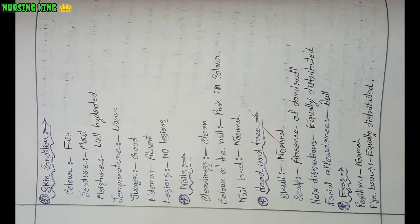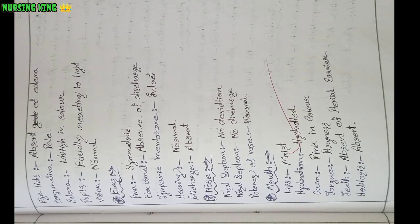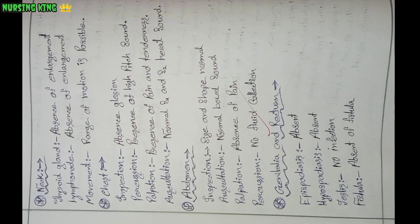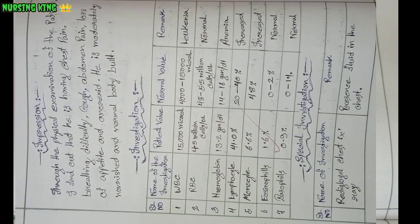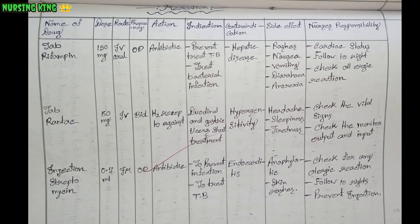In the physical examination, you have to write the general components and vital signs, then the head-to-toe examination — eyes, ears, nose, mouth, and every body part. Note any abnormalities present or not, then also document upper extremities and lower extremities.